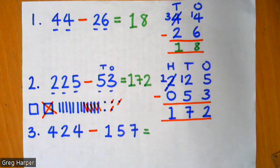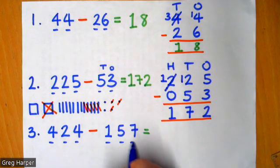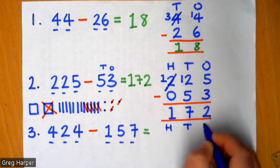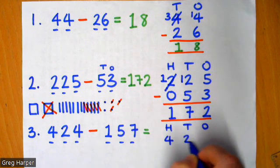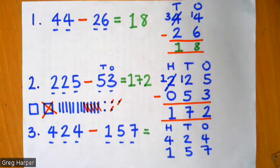So my final sum here is 424 take away 157. Again, I've got a three digit number and a three digit number. So I'm going to need my hundreds, tens, and ones column. Again, I'm going to put 424 at the top, 157 underneath. I'm going to add my operation, which is subtraction, and I'm going to add my answer box underneath.